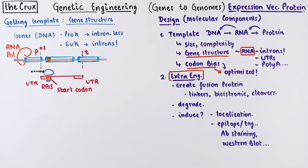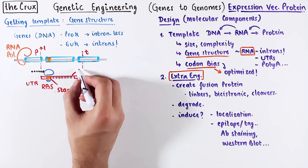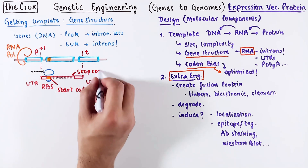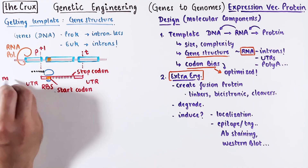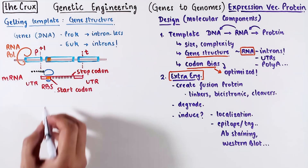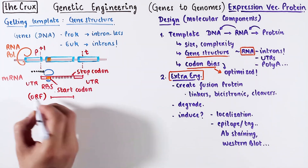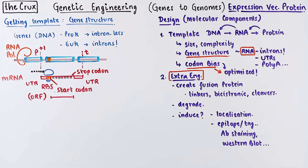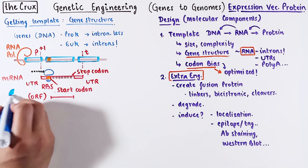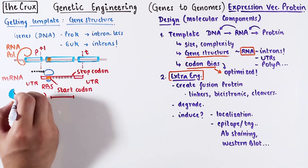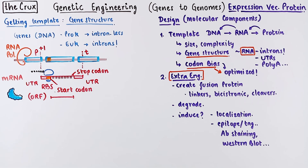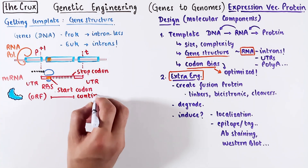The ribosome reads three bases at a time called codons, and it stops when it encounters a stop codon. In this mRNA, the portion that literally gets translated into a protein by the ribosome is called the open reading frame. The ORF in the final mRNA is always contiguous.